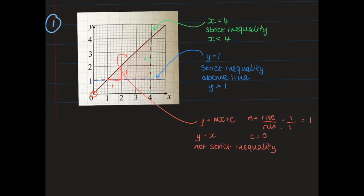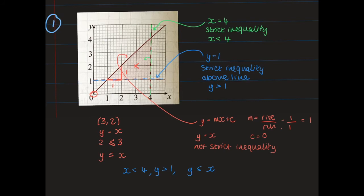For the y equals x line, I'll take a point from the region to determine the inequality. The point (3, 2): substituting into y equals x gives 2 in some relationship to 3. Since 2 is less than 3, and the line is solid so not a strict inequality, the inequality is y is less than or equal to x. The final answer is: x is less than 4, y is greater than 1, and y is less than or equal to x.